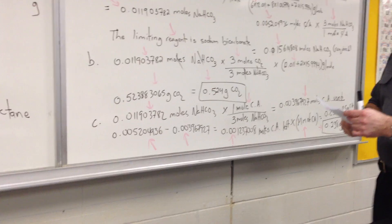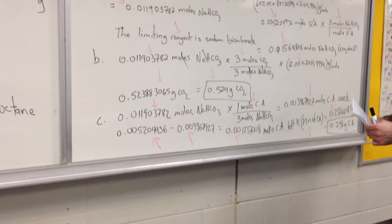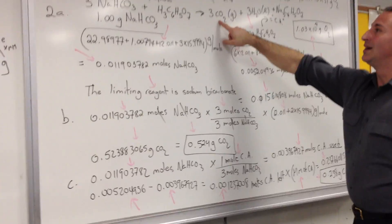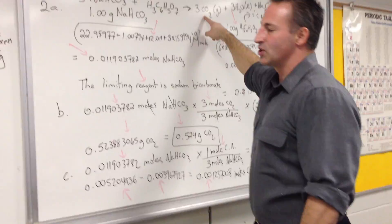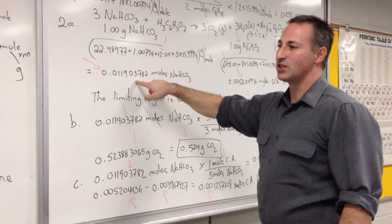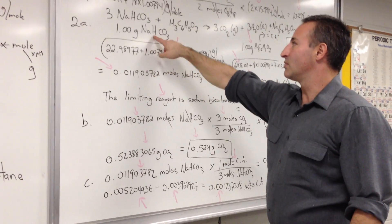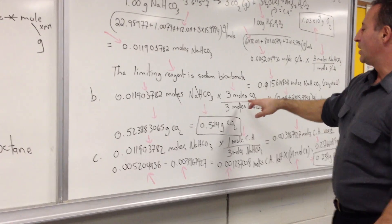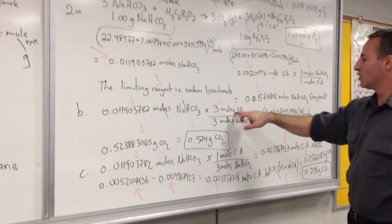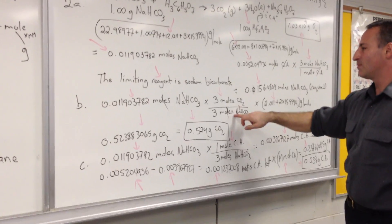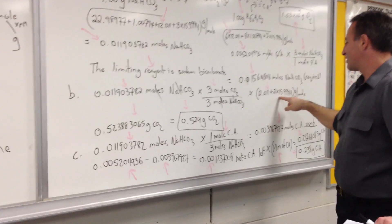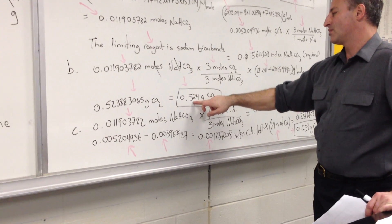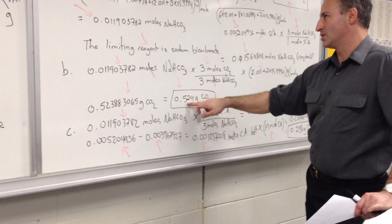In section B, we're asked how many grams of sodium bicarbonate form. Sorry, how many grams of carbon dioxide form. How do we calculate that? Well, we have to start our calculation with the limiting reagent. We have to start our calculation with this number. This is the reagent that is going to stop the reaction. So we start off with that number. We factor in the stoichiometry, which is three to three. Three moles of CO2 are produced for every three moles of sodium bicarbonate. We multiply by the molar mass of carbon dioxide, and we get the following answer, which has to be rounded down to three significant figures. 0.524 grams of CO2 is generated.